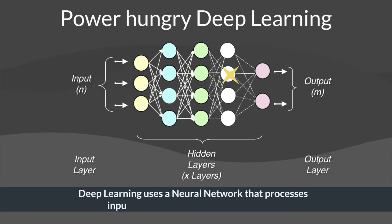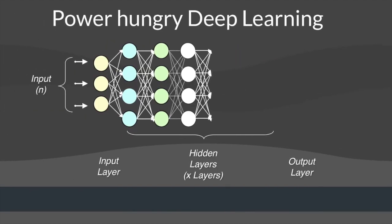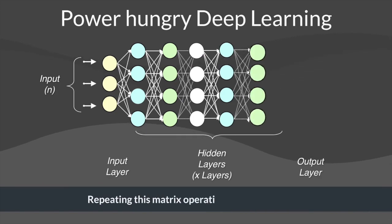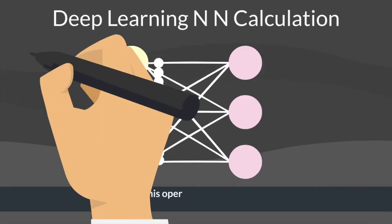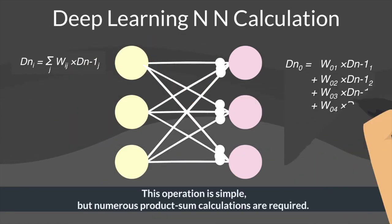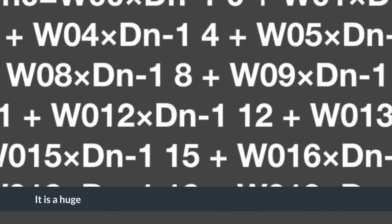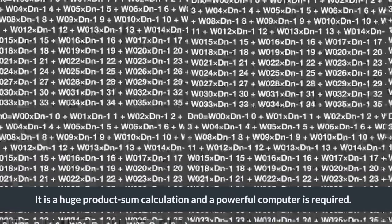Deep learning uses neural networks that process input data to come up with output data, repeating this matrix operation in dozens of layers. This operation is simple, but numerous product sum calculations are required. It is a huge product sum calculation and a powerful computer is required.